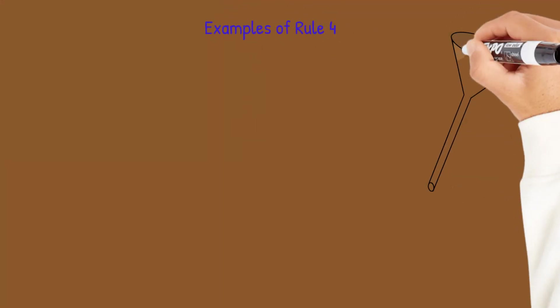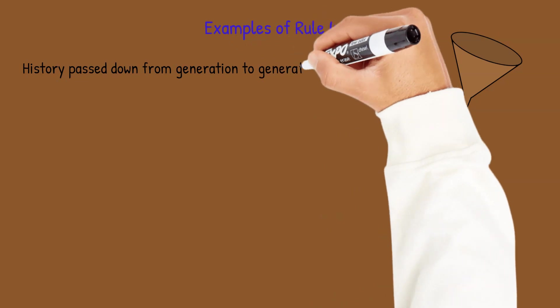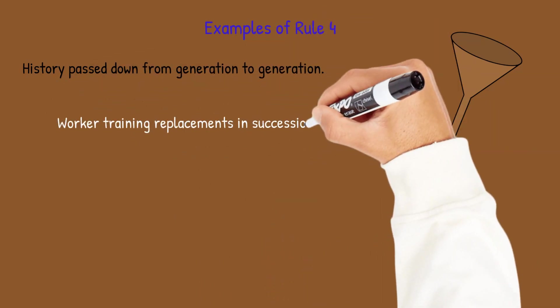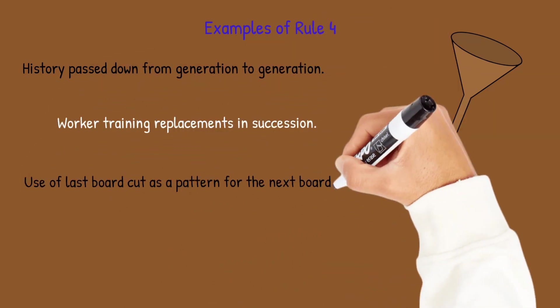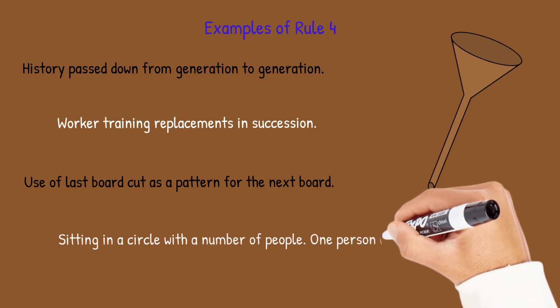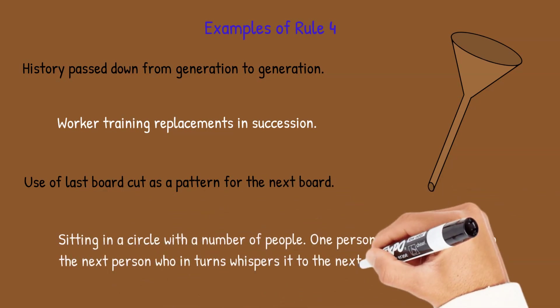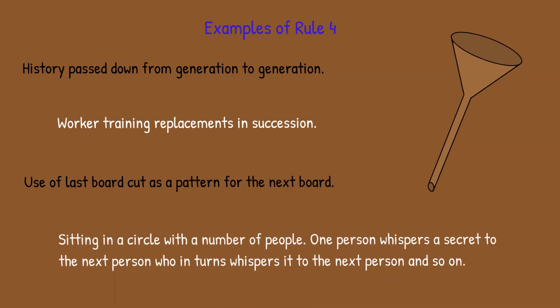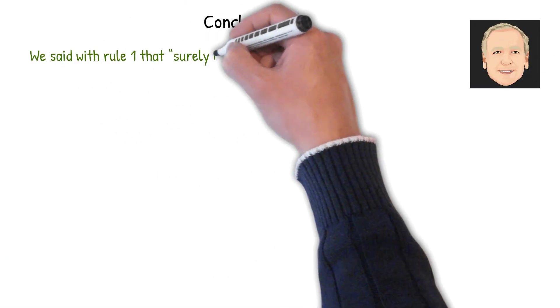And then finally rule four. Where you're just putting the funnel over wherever the marble ended up. Surely you won't do that. But worker training replacements in succession is just that. Or using the last board as a pattern for the next board. Or that game we played as a kid sitting in a circle with a number of people. You whisper a secret. It goes around and it's nothing like it was at the end.